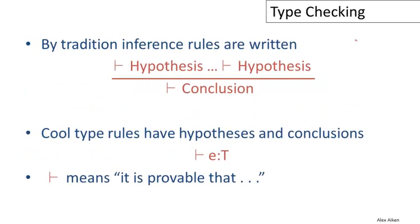The traditional notation for inference rules is given here. The hypotheses are written above a horizontal line and the conclusion is written below. It means exactly the same thing: if all the things above the horizontal line are true, then the thing below can be concluded to be true.